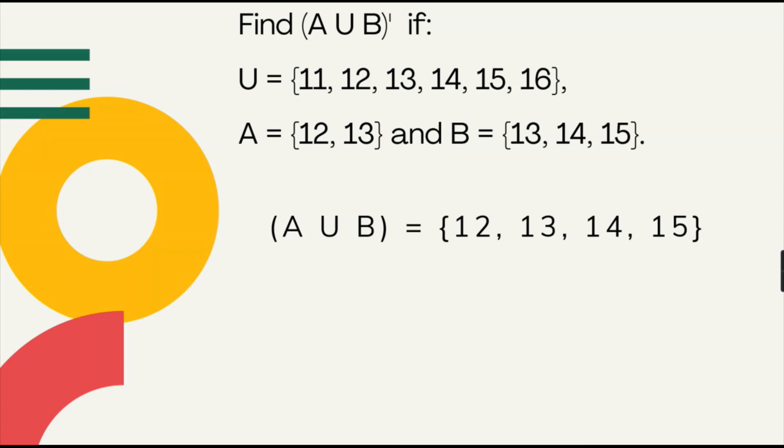So to get the A union B complement, you would have to eliminate the elements 12, 13, 14, and 15 from the set U, which will leave us with only 11. Therefore, the answer for the A union B complement is equal to 11.